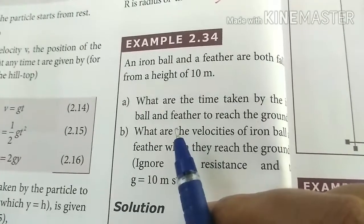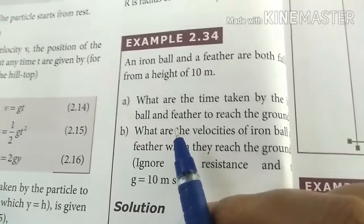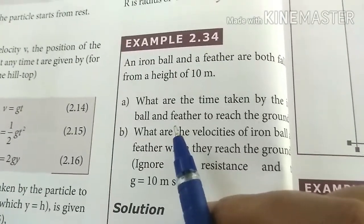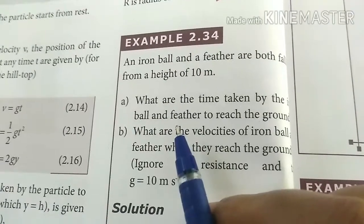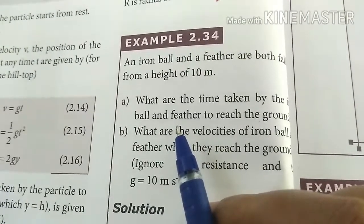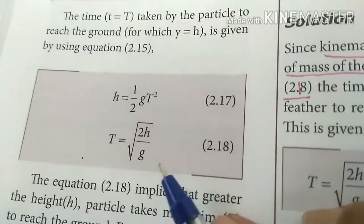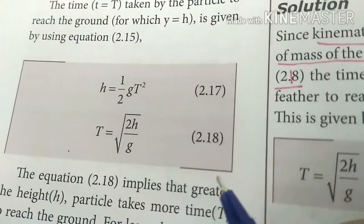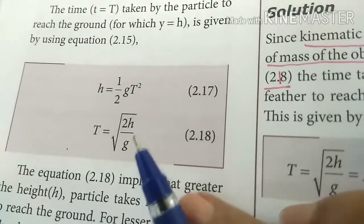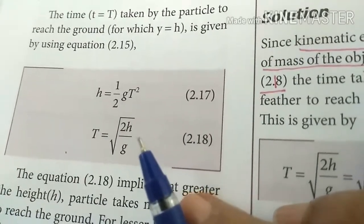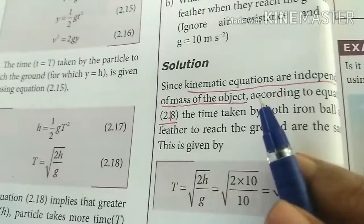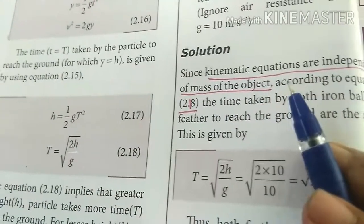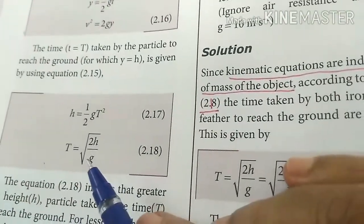What are the time taken by the ball and feather to reach the ground? Kinematic equations are independent of mass of the object.